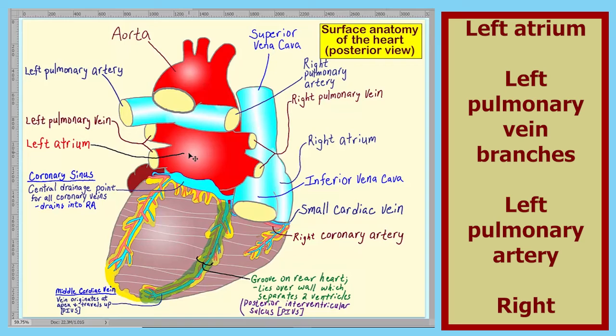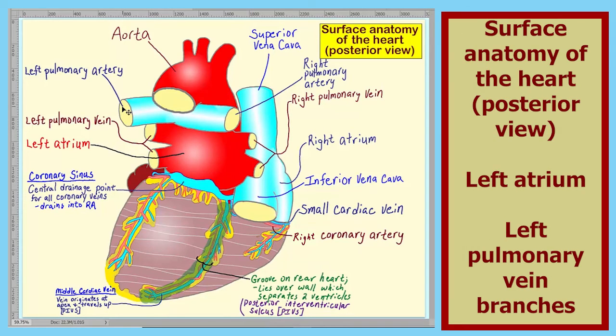Here is the left atrium. Here are branches of the left pulmonary vein and the left pulmonary artery. This is the surface anatomy of the posterior heart. That concludes this lecture.